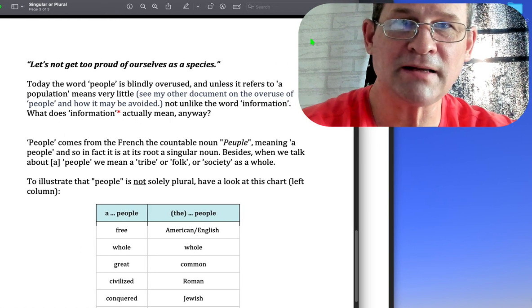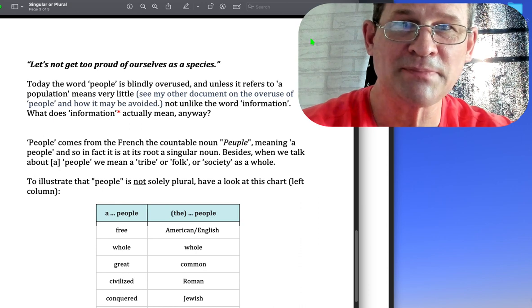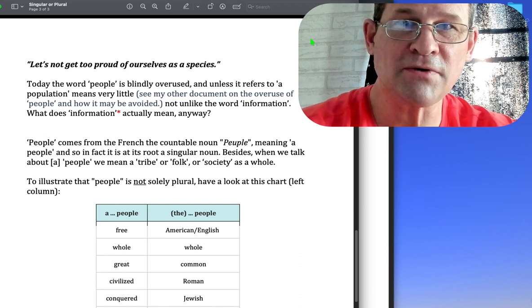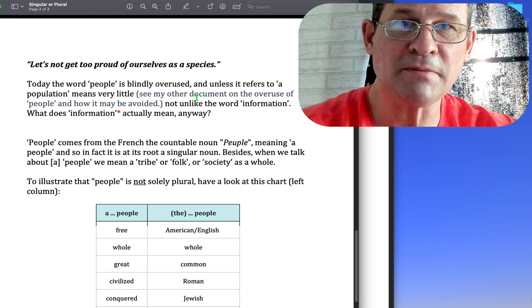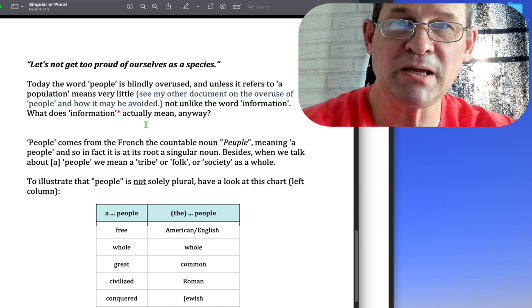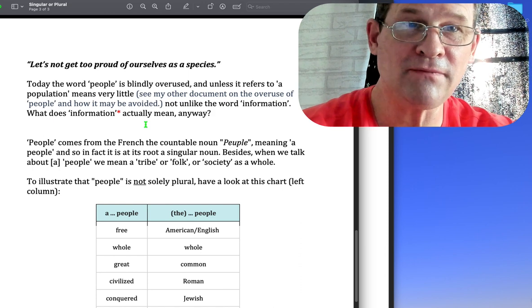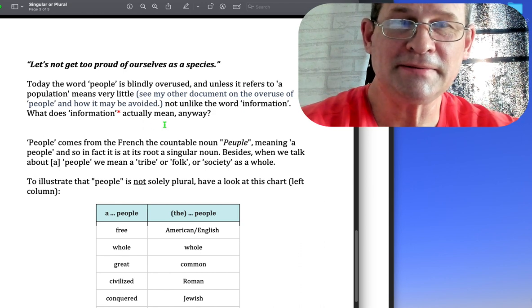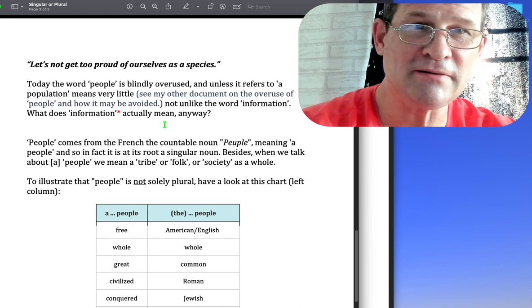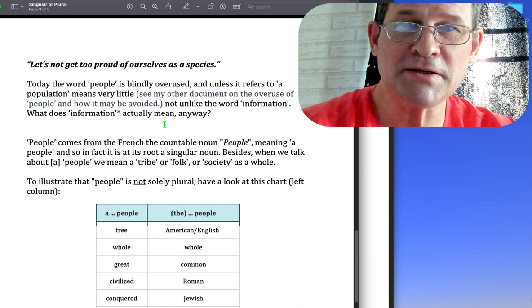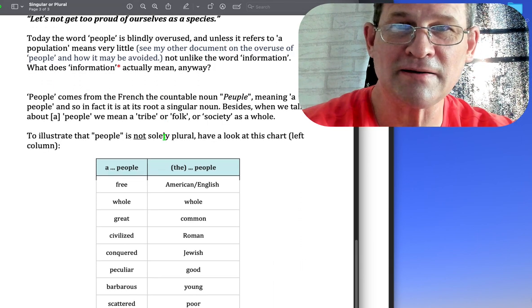Let's not get too proud of ourselves as a species. Today the word 'people' is blindly overused, and unless it refers to a population, means very little. I will also read from my other document on how we overuse the word people and how we may avoid it, not unlike the word information, which will be the subject of another video. What does information actually mean anyway?